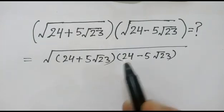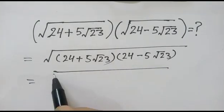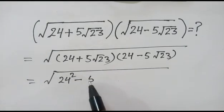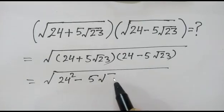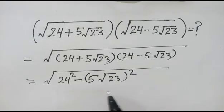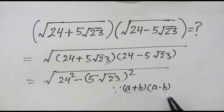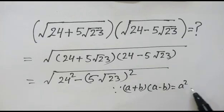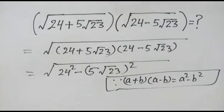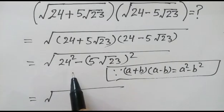We can write this problem as square root of 24 squared minus 5 square root of 23 whole squared, because a plus b times a minus b is equal to a squared minus b squared.